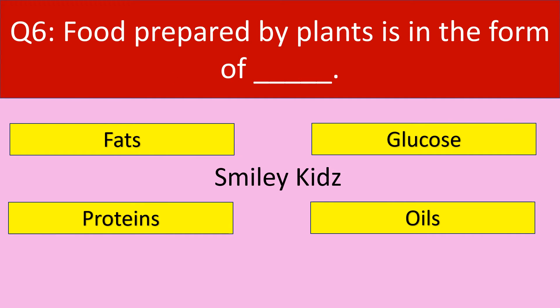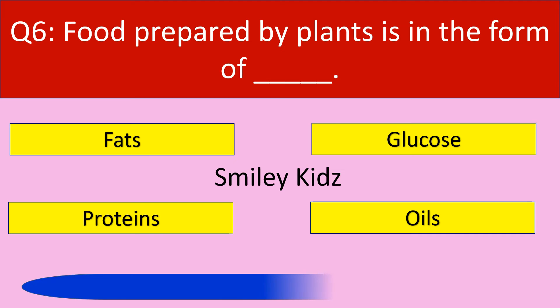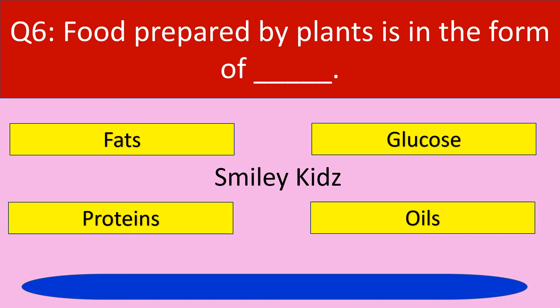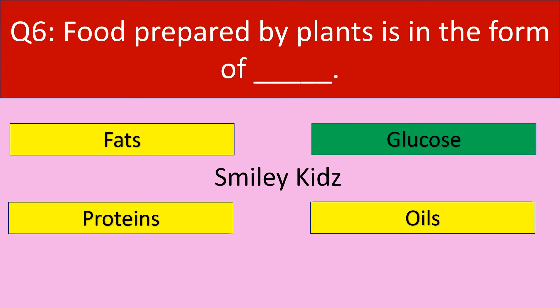Question number 6. Food prepared by plants is in the form of — fats, glucose, proteins, or oils. Your time starts now. The correct answer is glucose. Food prepared by plants is in the form of glucose.